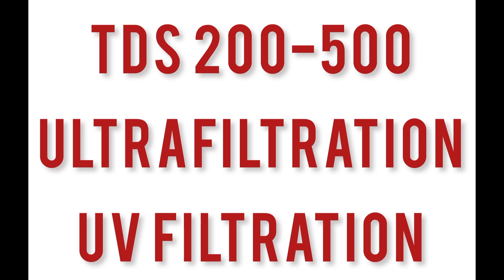If you have a municipal water supply and the TDS is 200 to 500, what you need is just ultrafiltration and UV filtration. Ultrafiltration will take care of larger sediments, mud, and dust from contamination and pipes. There is always a possibility of germs, so UV filtration makes the water safe. For TDS of 200 to 400, UF and UV is all you need.